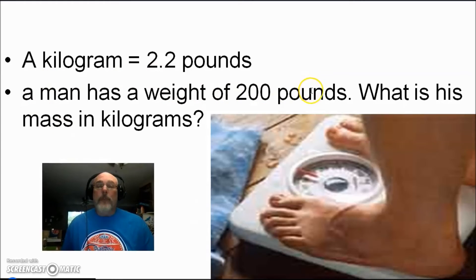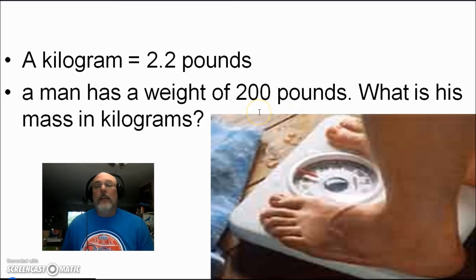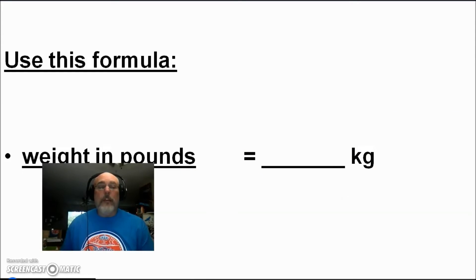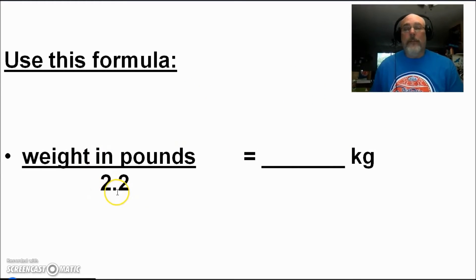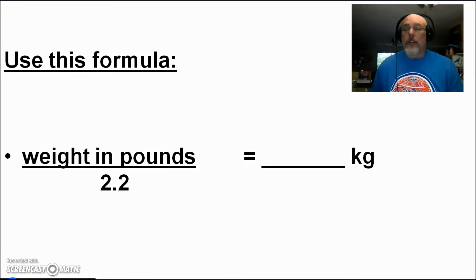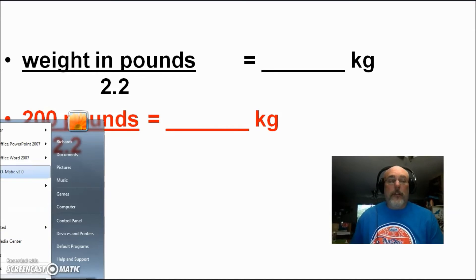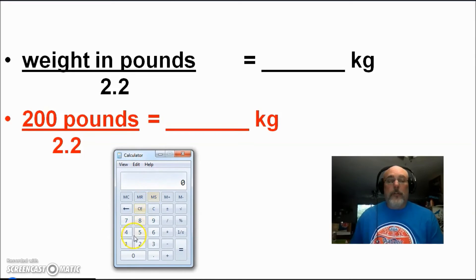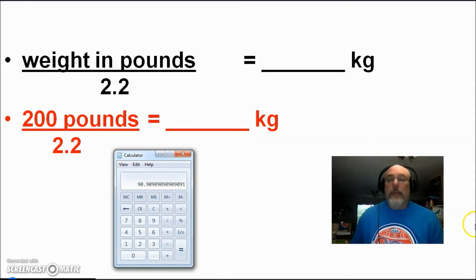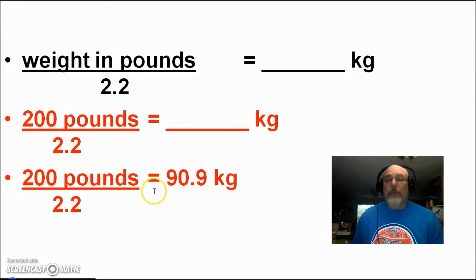Here's another example. A man has a weight of 200 pounds. What is his mass in kilograms? We're going the opposite direction, so the answer should be a number much less than 200. Using the conversion factor of 0.45, or equivalently dividing by 2.2: weight in pounds divided by 2.2 equals kilograms. So 200 divided by 2.2 — use a calculator — equals approximately 90.9 kilograms, or roughly 91 kilograms.